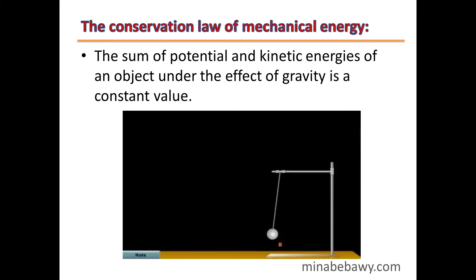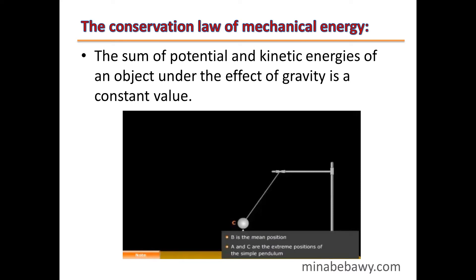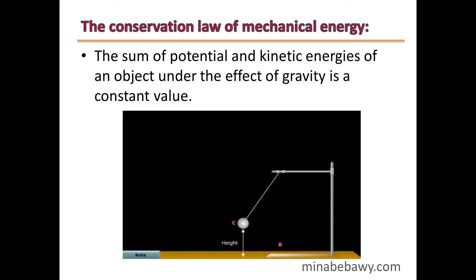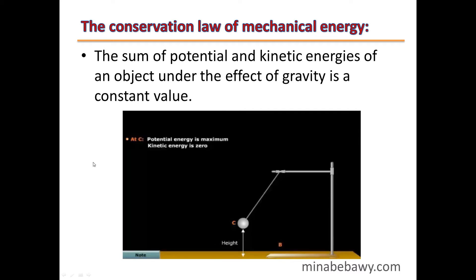For example, if we have a pendulum which is at rest at D and we push this pendulum to move to C, at C it has the maximum height from the ground. So at C, its potential energy is maximum and its kinetic energy is zero, because its velocity is zero.